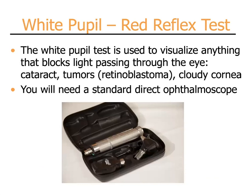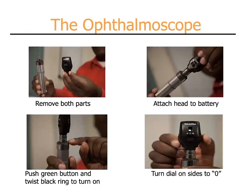We have mentioned the white pupil red reflex test and how important this is. The white pupil test is used to visualize anything that might block the light passing through the eye — this would include cataracts, tumors such as retinoblastoma, cloudy corneas, etc. You will need a standard direct ophthalmoscope as illustrated here. The ophthalmoscope is assembled by taking the two parts, inserting the head into the charging handle, and twisting it. It is turned on by depressing the green button on the sleeve and rotating the black sleeve. The diopter settings should generally be set to zero, and you want to use the white light and not the green or blue lights.